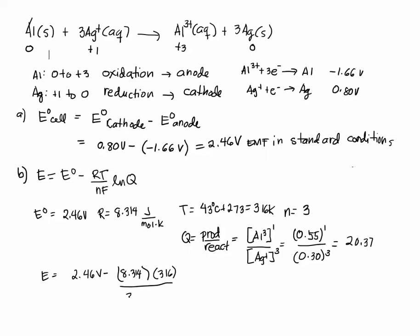n is three. F is ninety six thousand four hundred eighty five. ln Q, and Q we determined to be twenty point three seven.